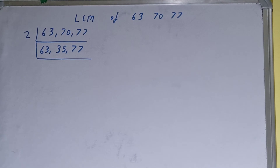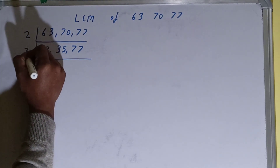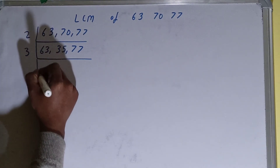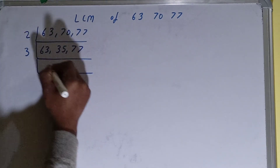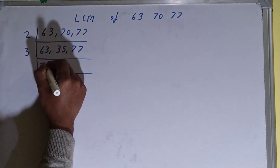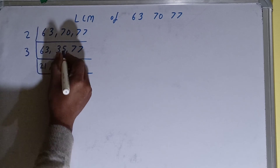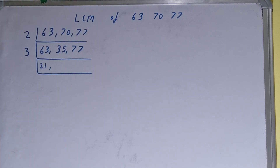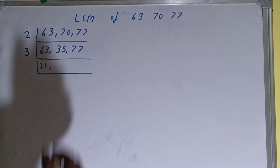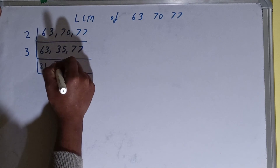Checking divisibility by 3: the first number, 63, is divisible by 3, so we divide it and it becomes 21. The numbers 35 and 77 are not divisible by 3, so we just copy them down.